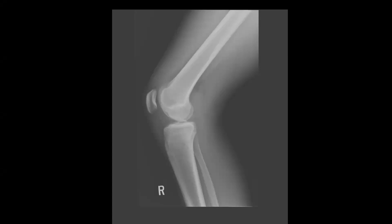Hello everyone, and welcome to week three and case three of the musculoskeletal unknown case series. This is one of my favorite cases, so I hope you enjoy it as well. This is a 26-year-old football player coming in with right knee pain, and here we have a lateral x-ray of his right knee.